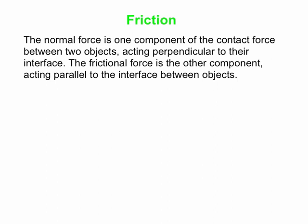We get friction when objects are in contact. There is a contact force that exists between objects in contact. The normal force is perpendicular to the interface between the objects. The frictional force is the other component of the contact force, and it acts parallel to the interface between objects.